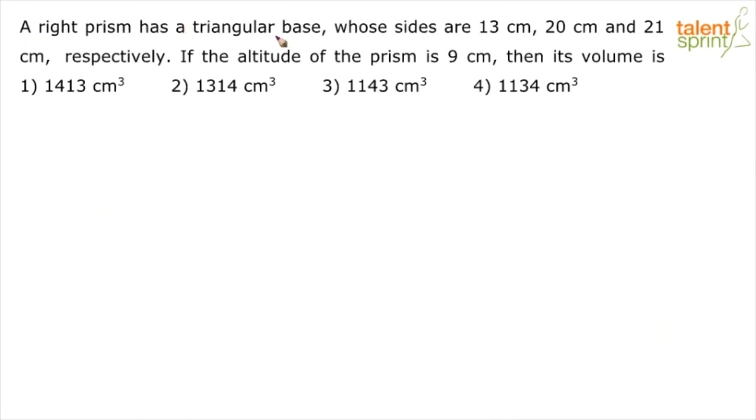A right prism has a triangular base whose sides are 13, 20 and 21 centimeters respectively. If the altitude of the prism is 9 centimeters then its volume is? Options are 1413, 1314, 1143, 1134.